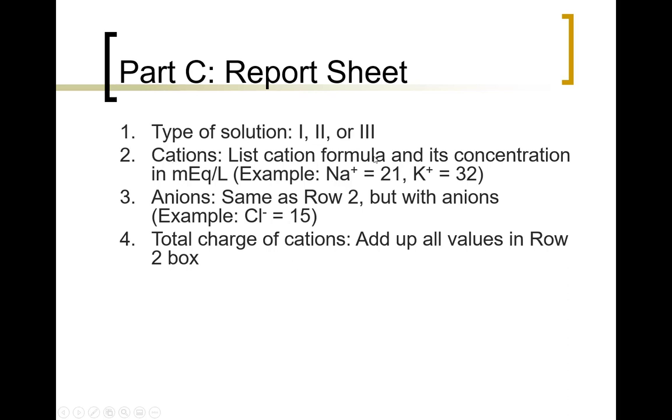On the other hand, let's say that in row two, it has two values like you're seeing here. Sodium is 21, potassium is 32. You would just add those numbers together. That would give you 53. And that is what would go in row four.